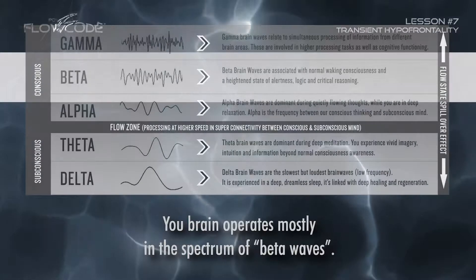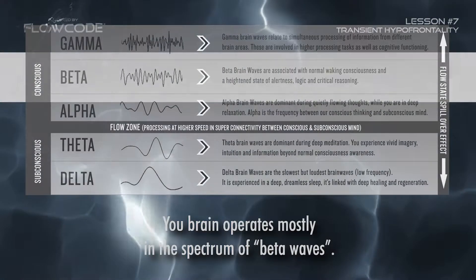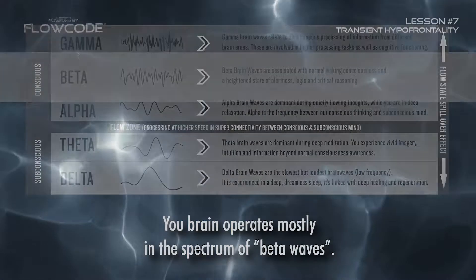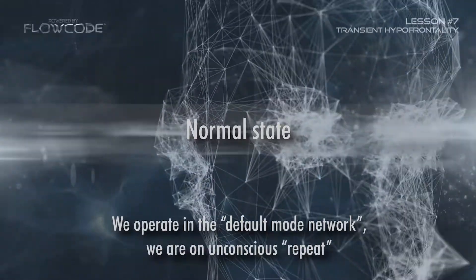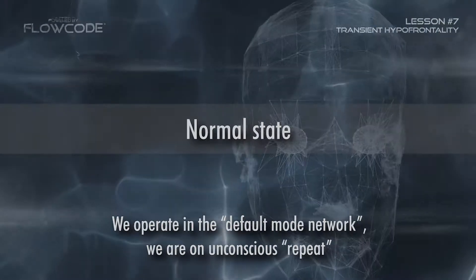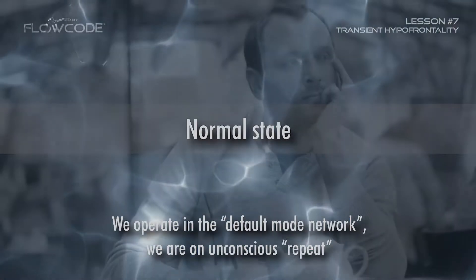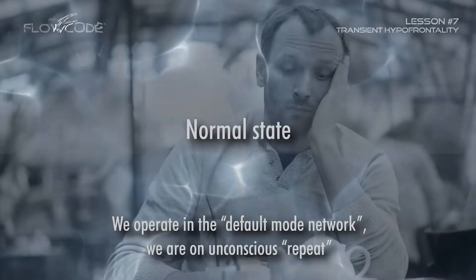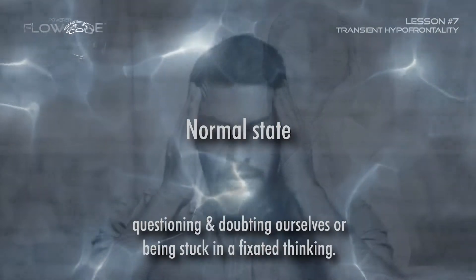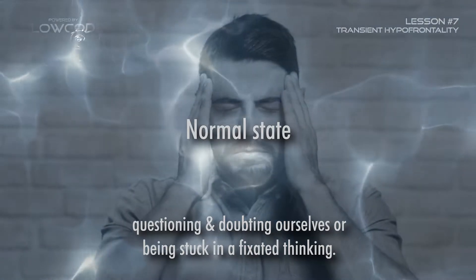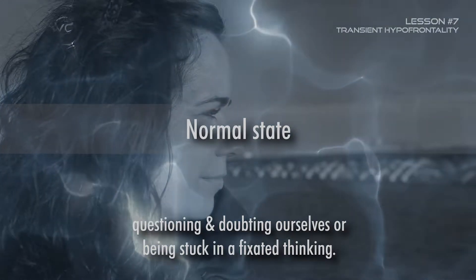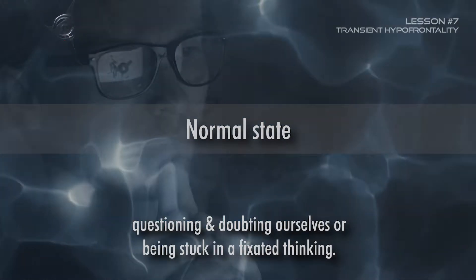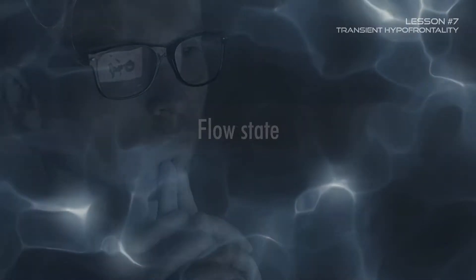Your brain operates mostly in the spectrum of beta waves. We operate in the default mode network — unconsciously questioning and doubting ourselves, or being stuck in fixated thinking.